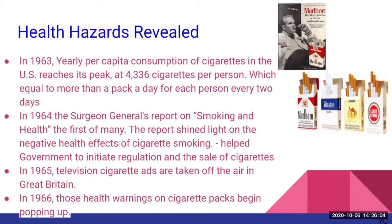In 1963, yearly per capita consumption of cigarettes in the United States reached its peak at 4,336 cigarettes per person — more than a pack a day for each person every two days. After the war, cigarette companies were heavily advertising on TV. Camel Cigarettes sponsored the nation's first regular television news program, the Camel News Caravan — it featured an ashtray on the desk in front of newscaster John Cameron Swayze, with the Camel logo right behind him. This was a 15-minute news show that ran from 1949 to 1956.